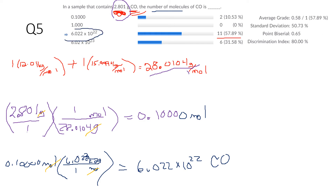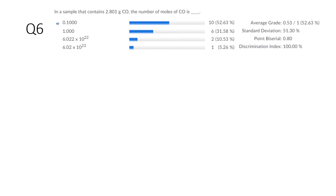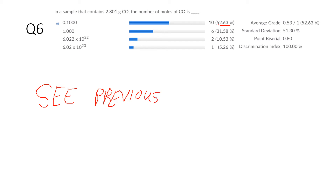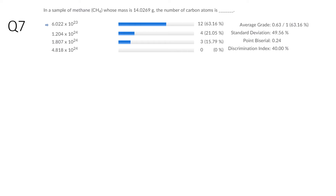This one was actually easier because we calculated 0.1 on the previous problem with exactly the same thing. Everybody has credit on question six because the correct answer is not actually listed. I believe what the other professor who wrote this question did is considered carbon and only two of the hydrogens when getting the formula mass instead of all four, which gives that answer. But I give everybody credit since the correct answer wasn't there.